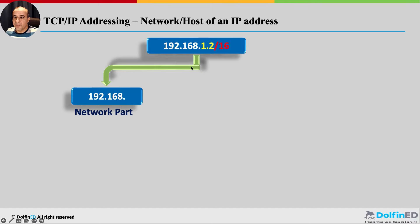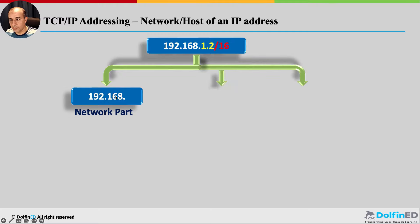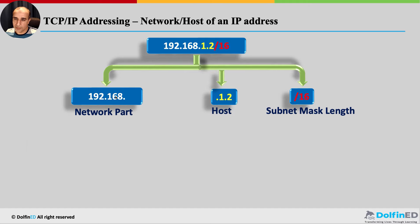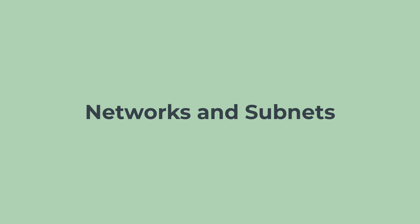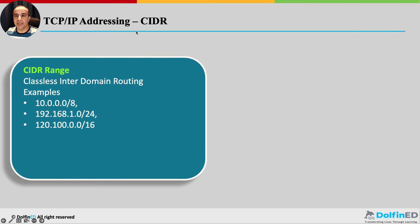With 192.168.1.2/16, the network is the first two fields (192.168) and the right two fields are the node or host part — the subnet mask is the judge that decides which is which. Now let's get into subnetting. To understand subnetting, we need to understand CIDR — Classless Inter-Domain Routing. A CIDR range is a block of IP addresses, for example 10.0.0.0/8, or 192.168.1.0/24.